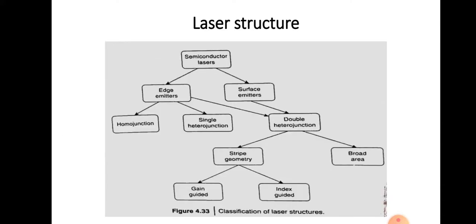Next, we will go to the detailed laser structure. The semiconductor laser is classified into edge emitters and surface emitters. Edge emitters are again classified into homo junction, single hetero junction, and double hetero junction lasers. Surface emitters are also of the double hetero junction type, which is further classified into stripe geometry and broad area. The stripe geometry is achieved by gain guided lasers and index guided lasers. We are interested in the gain guided and index guided laser structures, so we will go to the details of those.